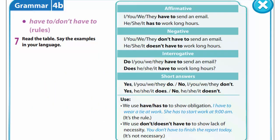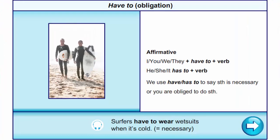It's the equivalent of the modal verb 'must': have to or don't have to. Let's look at the rules. Have to means obligation. In affirmative sentences we use I/you/we/they plus have to plus verb; he/she/it has to plus verb. We use have/has to to say something is necessary or you are obliged to do something.